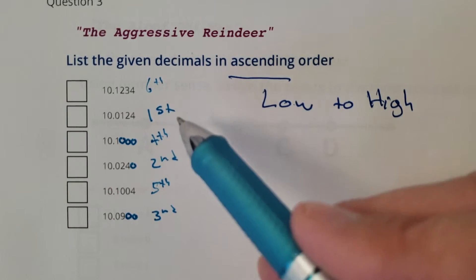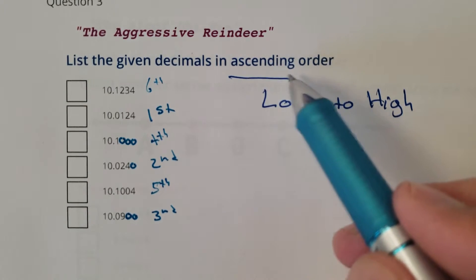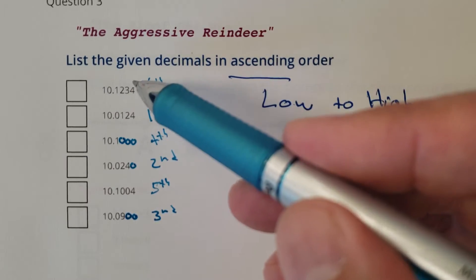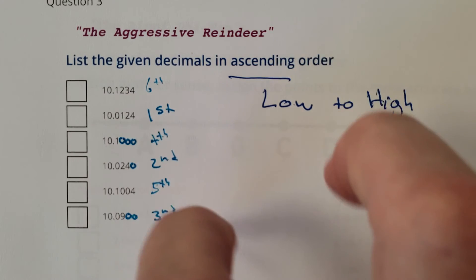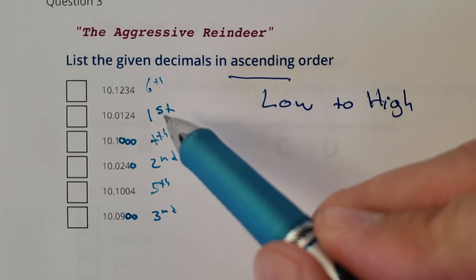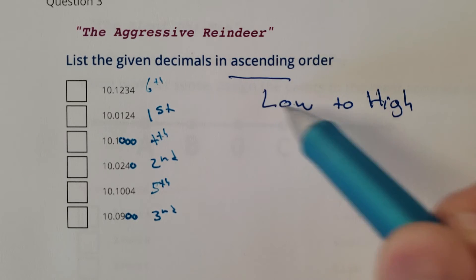Okay, so again, ordering in ascending order: list them low to high. Technically it's going down, but in ascending order you go from the lowest number to the highest number. So order them, list them lowest to highest.